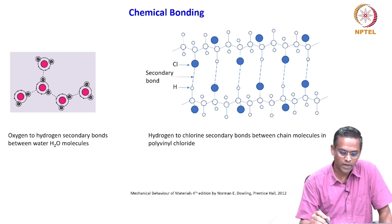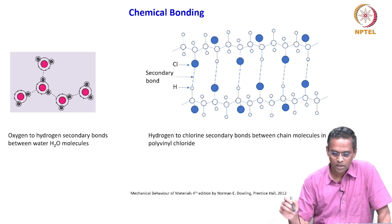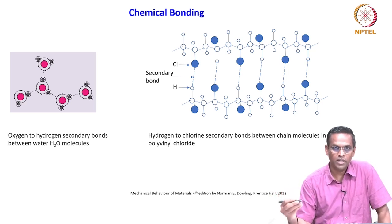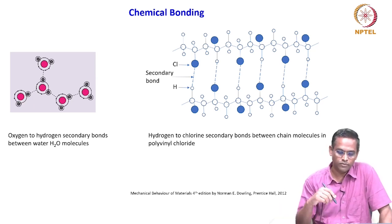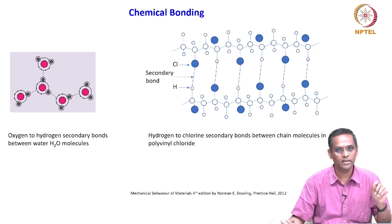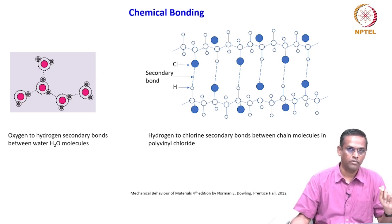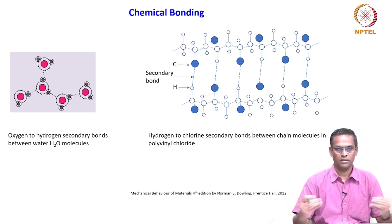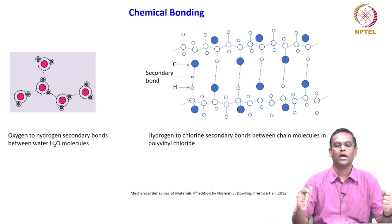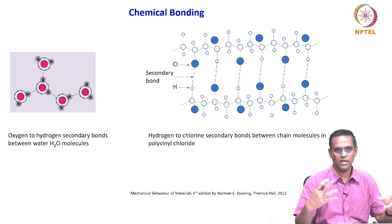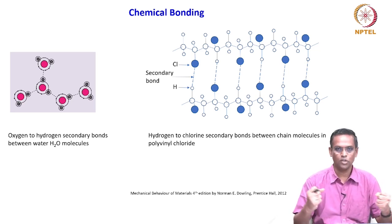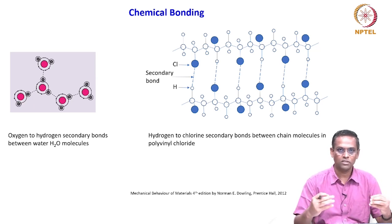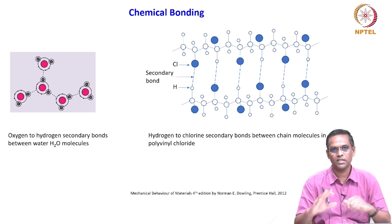The bonding between each carbon atom and hydrogen within the chain is covalent. When we discuss the external force on each one of them, we will understand why this bonding is important. The question is: if I take a polymeric material and apply an external load, which bond will respond first — which bond will resist to keep the material intact?